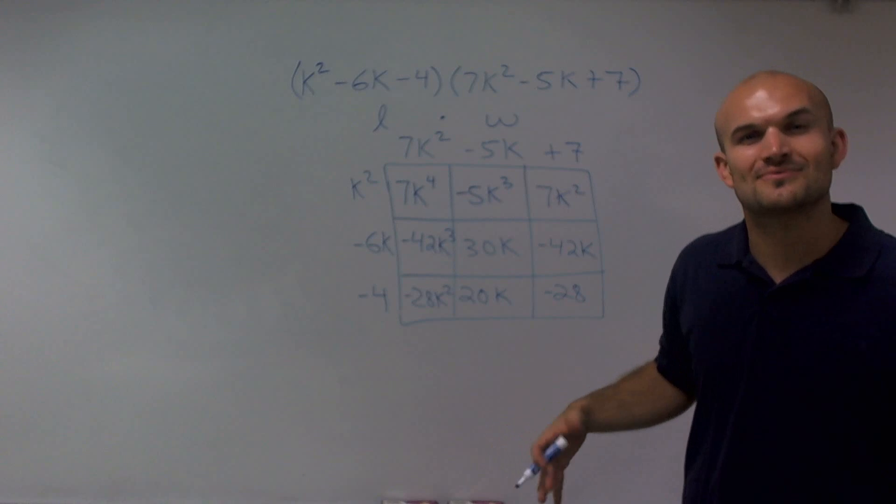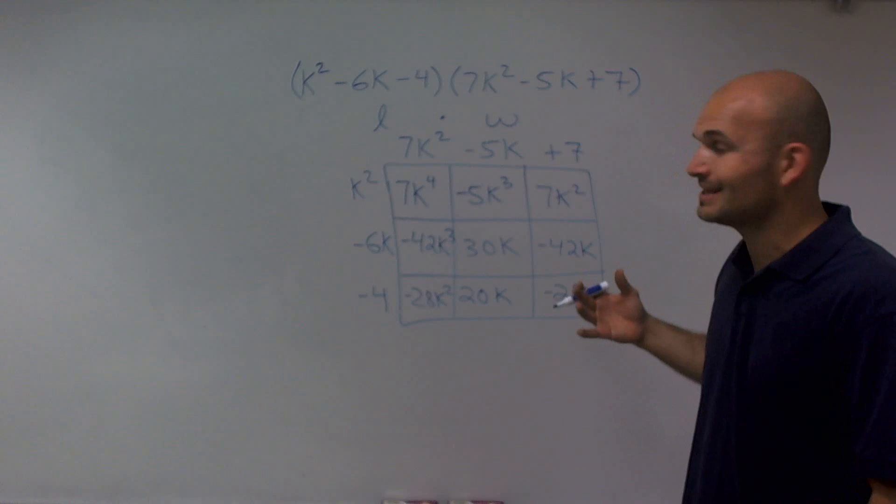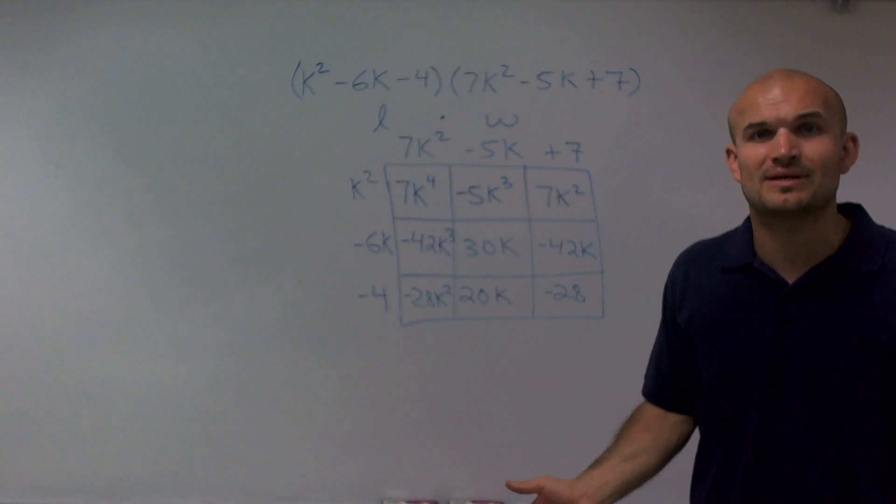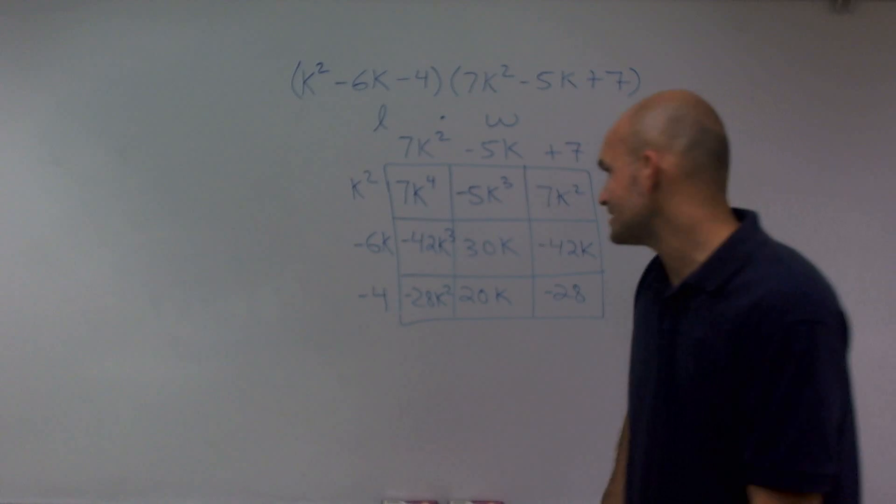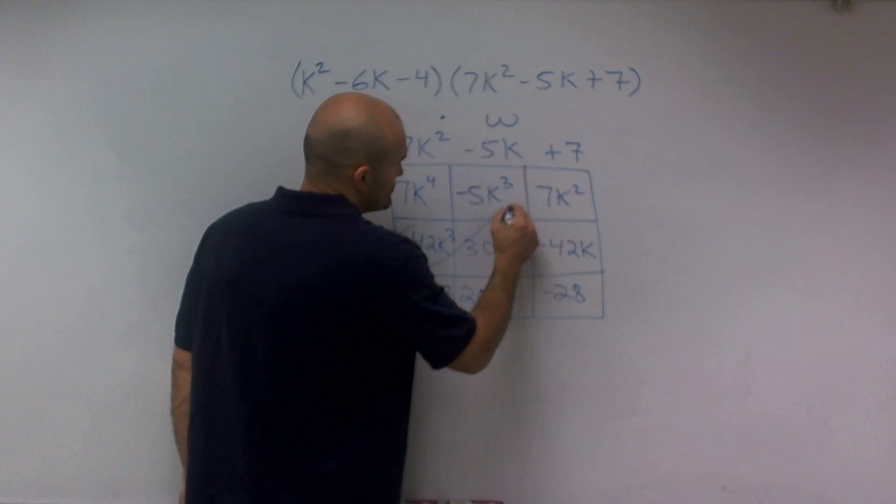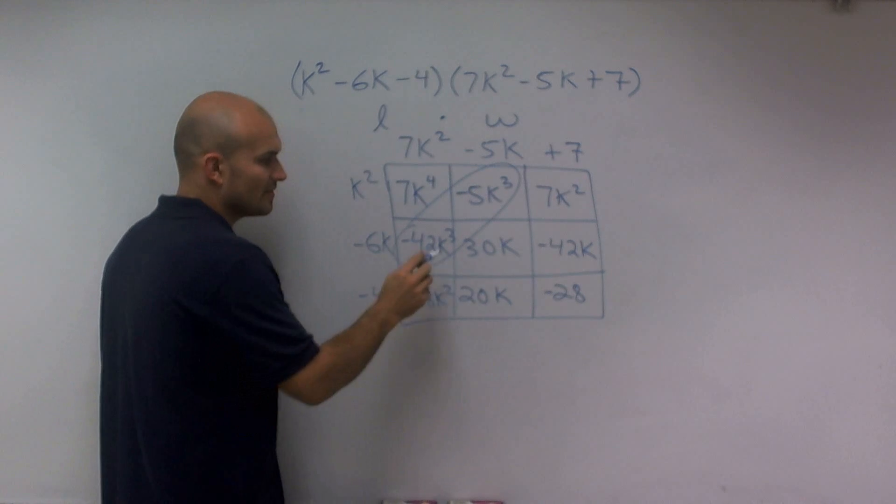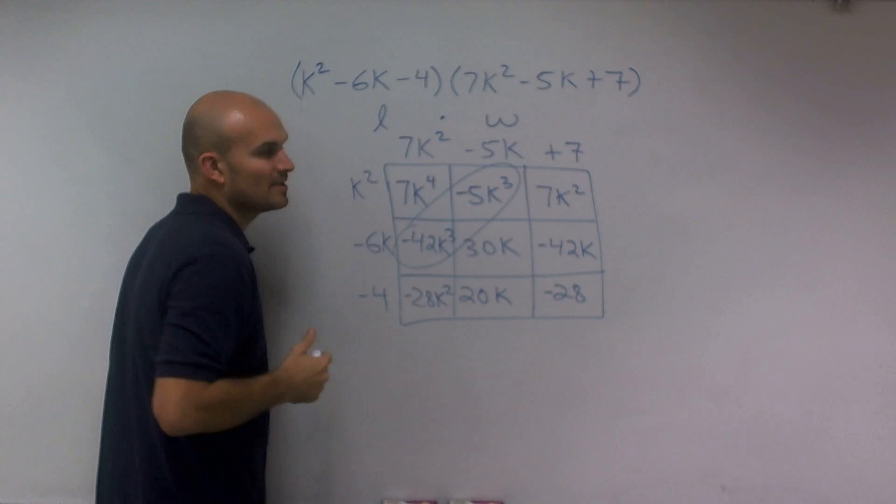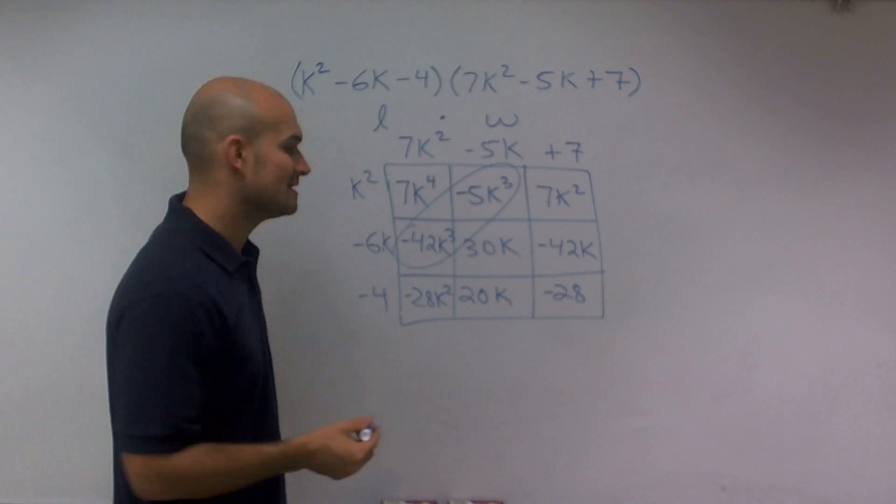The cool thing I noticed about this is I noticed some patterns. These two boxes are similar. They both have k cubed in them, meaning they're like terms, meaning that I can combine them.